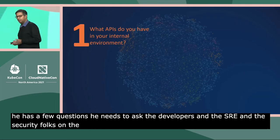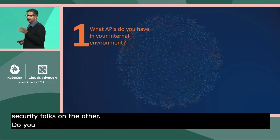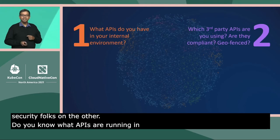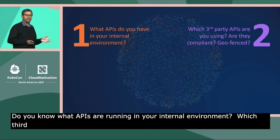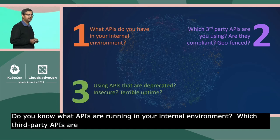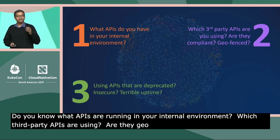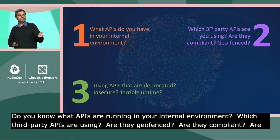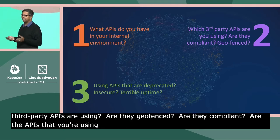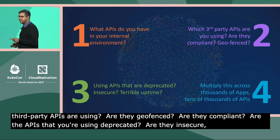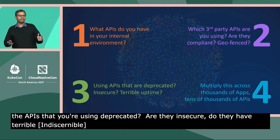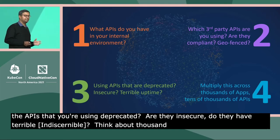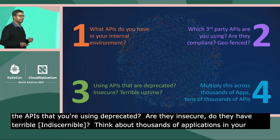Do you know what APIs are running in your internal environment? Which third-party APIs are you using? Are they geofenced? Are they compliant? Are the APIs that you're using deprecated? Are they insecure? Do they have terrible uptime? And don't just think about that one application — think about thousands of applications in your environment and the tens of thousands of APIs as a result.